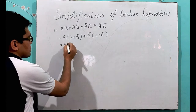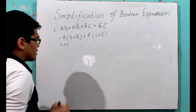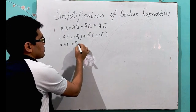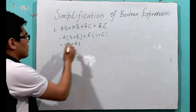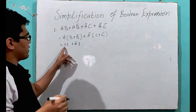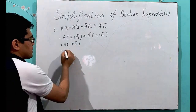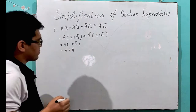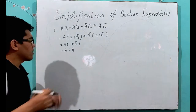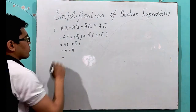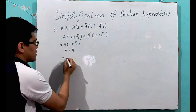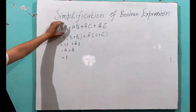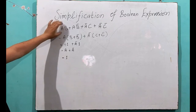This can be written as A·1 plus Ā·1. Now, we know that A·1 is A, and Ā·1 is also Ā — meaning these will remain the same. Now, we can apply the complementarity law again: A plus Ā equals 1. So after simplification of this Boolean expression, the result is 1.